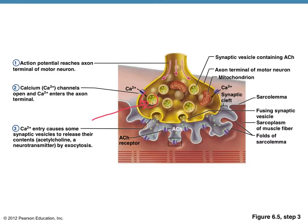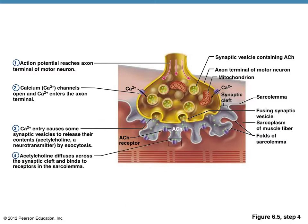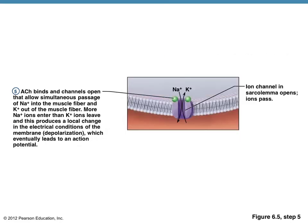All of these little circular structures are called vesicles, and they contain the neurotransmitter ACH. That moves to the surface of the axon terminal, and the little green molecules in the picture are released into the synapse, or the synaptic cleft. The ACH spans the synapse and binds to specific receptors on the sarcolemma — which, remember, is the special name for the cell membrane of the muscle fiber.